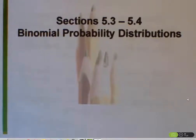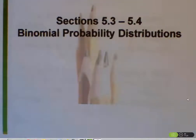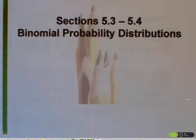In section 5.2, we talked about probability distributions. They're usually given to us as tables, where in the left-hand column we have all possible outcomes, and in the right-hand column we have the probability associated with each of those outcomes. In order to be a probability distribution, each one of the probabilities had to be a number between 0 and 1, and all of the probabilities had to add up either to one or something very close to one, such as 0.999 or 1.001.